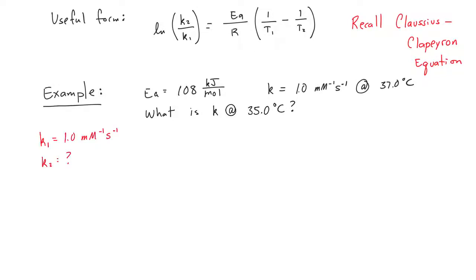To define the variables, we are going to make K1 be 1 per millimolar per second, and K2 is the rate constant at 35 Celsius. T1 will be 310 Kelvin, and T2 will be 35 degrees Celsius, or 308 Kelvin.